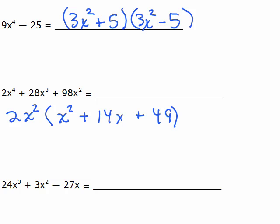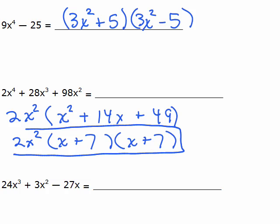That looks like a perfect square, again, just like a couple problems above, so 2x squared is still out here, and then you need to factor this, and actually, it's going to be plus 7 and plus 7, (x + 7)(x + 7), so you can either leave your answer like this, or you can write it as 2x squared times the quantity (x + 7) squared. Both of those are correct.